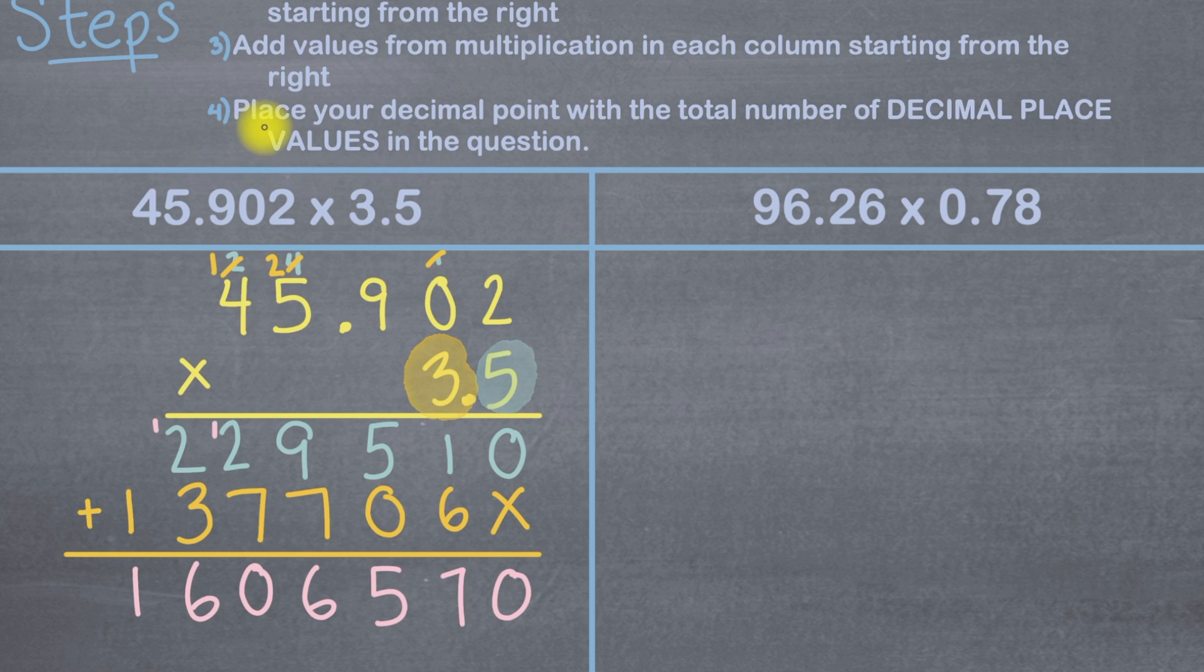So now we can look at step four, which says to place your decimal point with the total number of decimal place values in the question. So let's take a look at the question itself. Our first number in the question is 45.902. And how many numbers do you see to the right of the decimal point in that number? Well, I see 1, 2, 3. And how about in the second number of the question 3.5? How many numbers do you see to the right of the decimal point in this number? Well, I see 1. That would be the number 5. So all together we've got 1, 2, 3, 4.